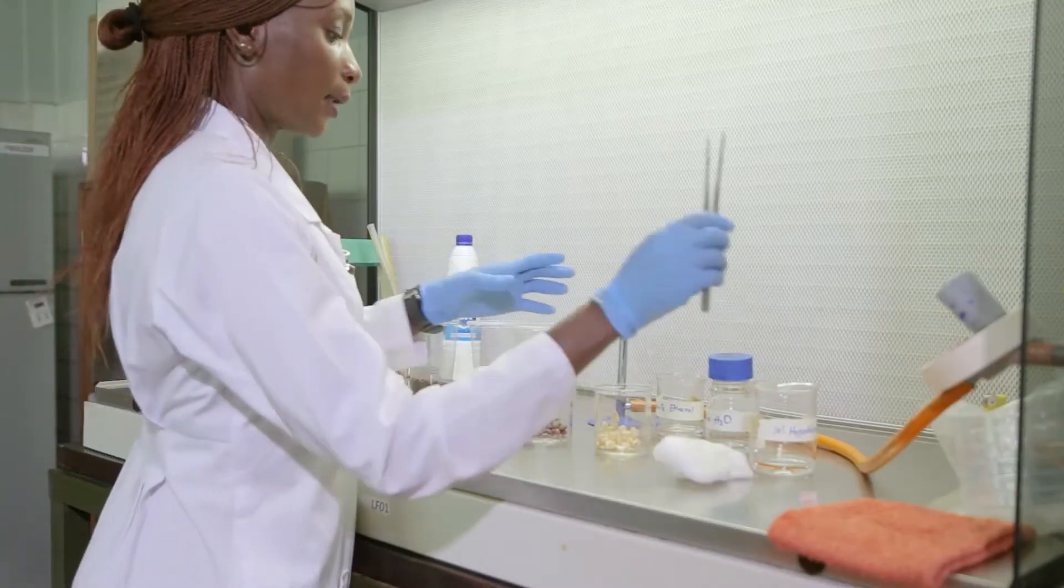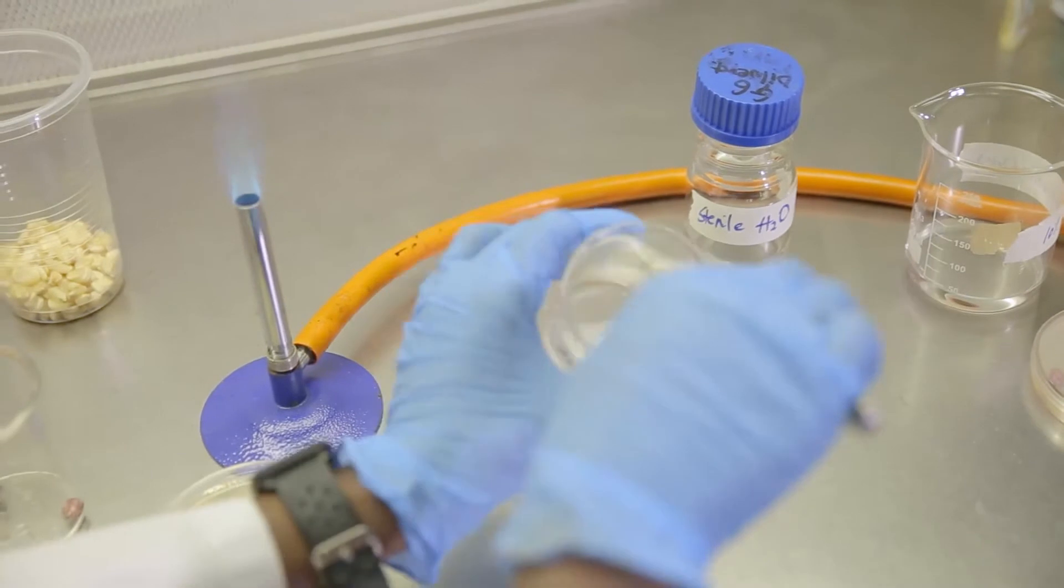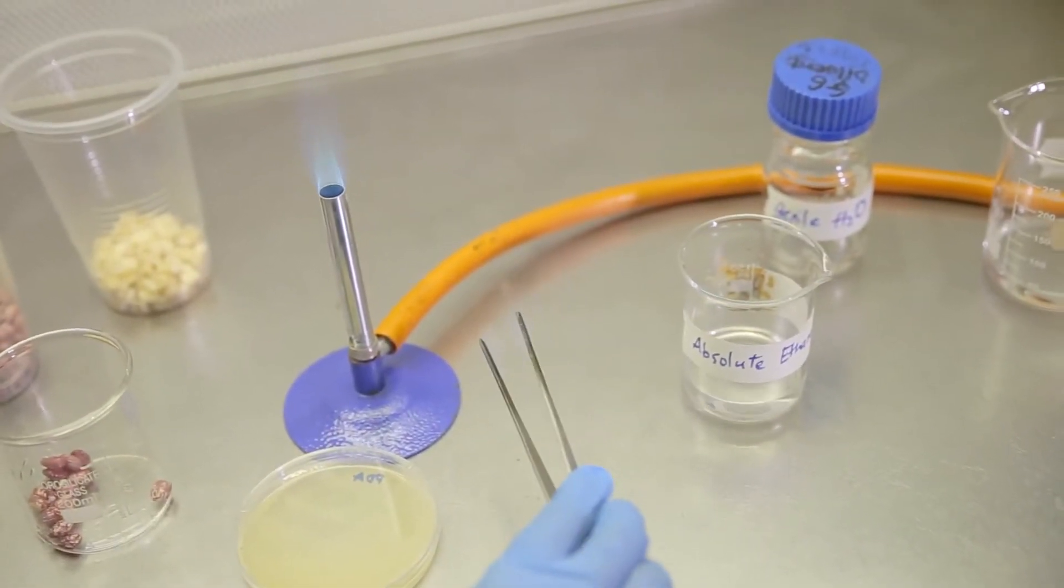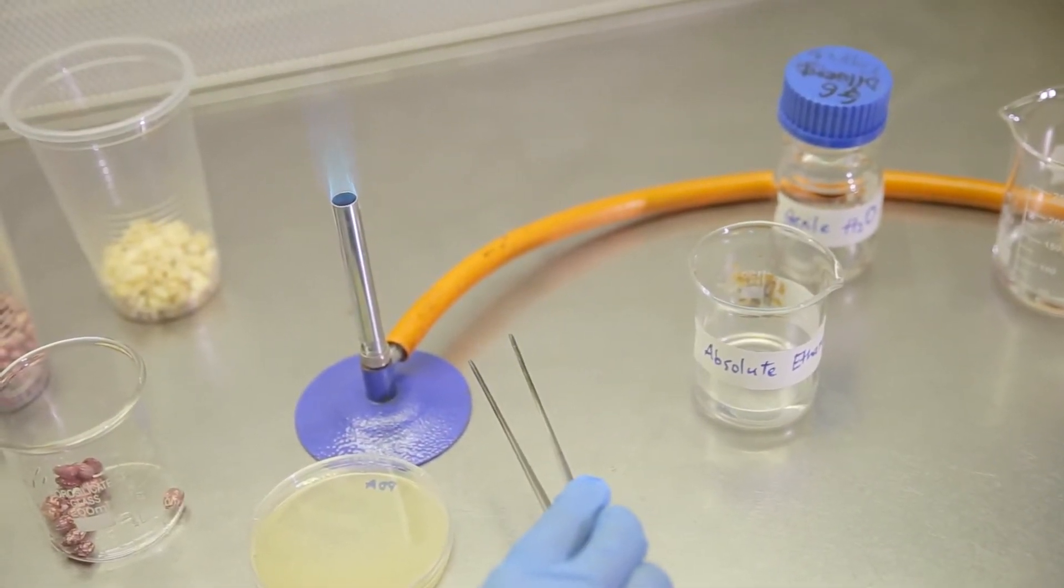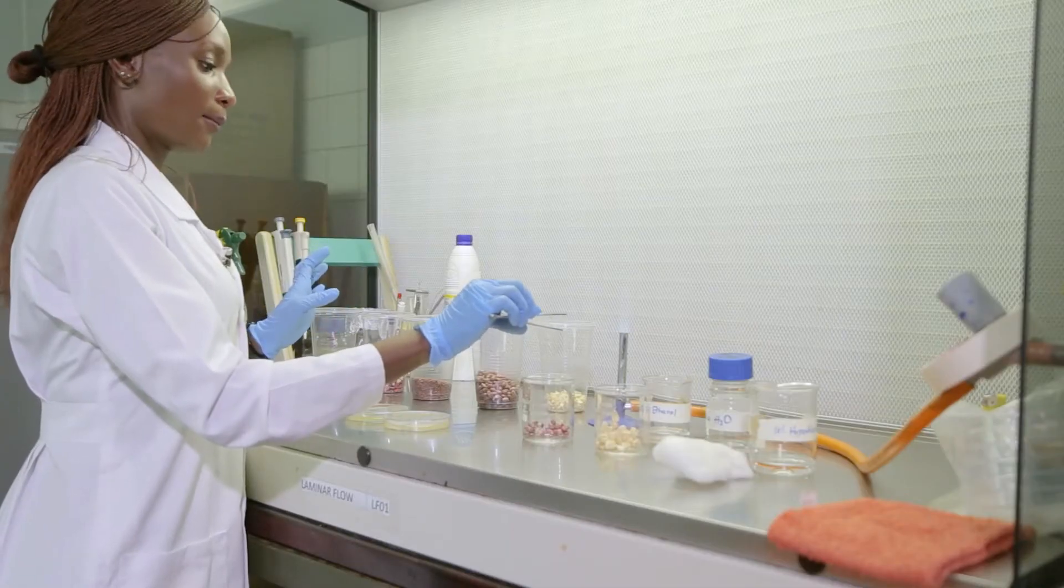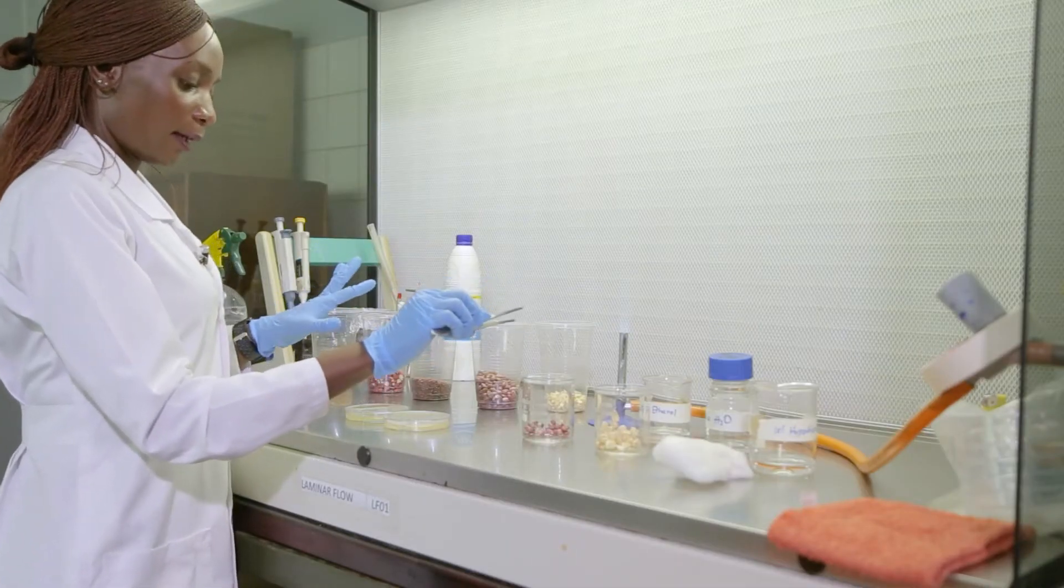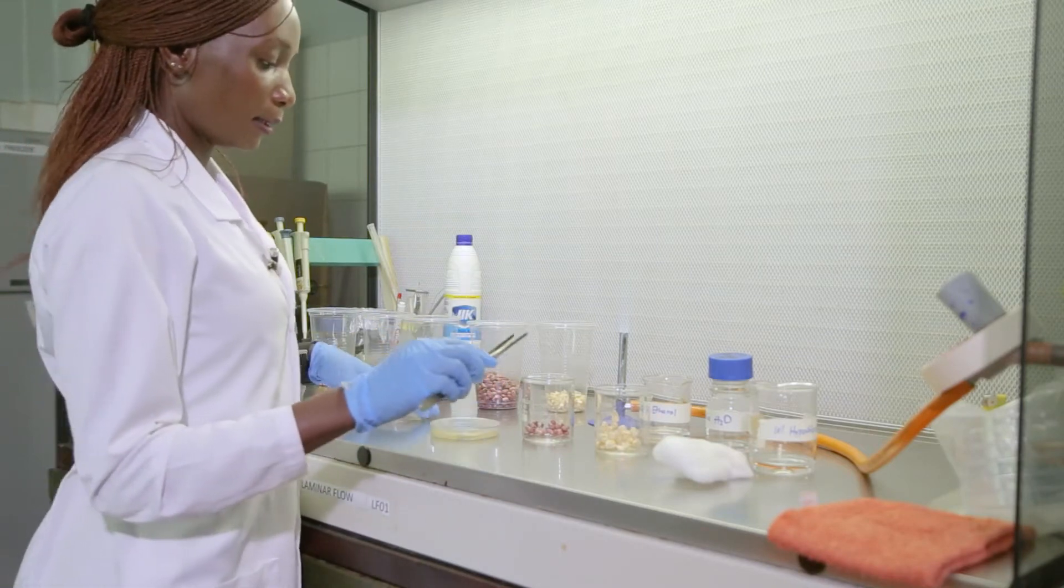So having done that, I get a pair of forceps and I sterilize it. I have dipped it in absolute ethanol and quickly pass it over the flame. This helps to disinfect my forceps such that if I have any fungi growing, they are coming from the internal parts of the seeds.